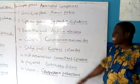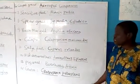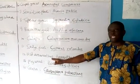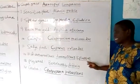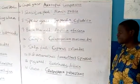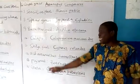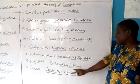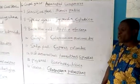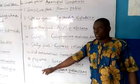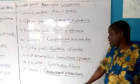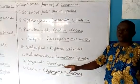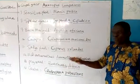Then we have what we call Wild Amaranthus. It looks like the normal Amaranthus people consume at home, but it is different — it is spiky in nature and has spikes in it. This Amaranthus weed is called Pigweed, whose botanical name is Amaranthus hybridus. Then we also have Centro, whose botanical name is Centrosema pubescens. This one is also another type of weed, but it is also leguminous in nature.